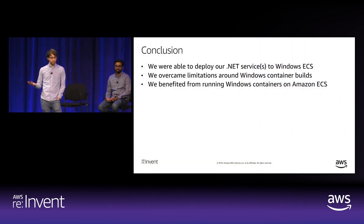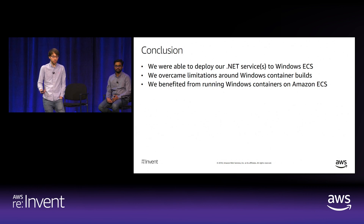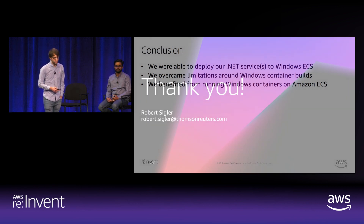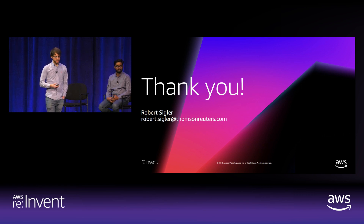That brings us to the end of our session. We talked about how we deployed .NET services to Amazon ECS on Windows, how we overcame limitations around building Windows containers, and how we benefited from running Windows containers on Amazon ECS. Thanks for listening. The slide deck will be posted online. We have a little extra time for questions.